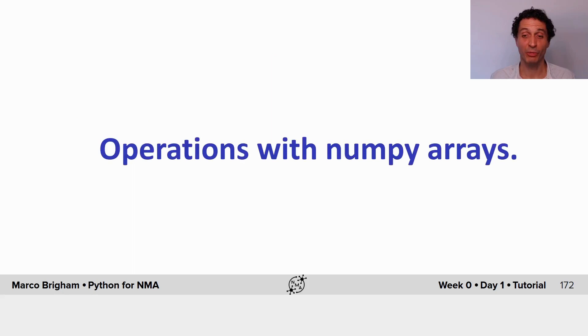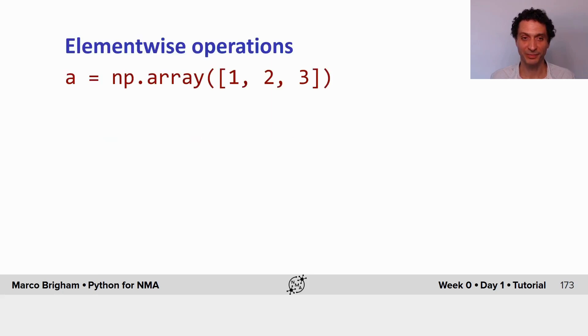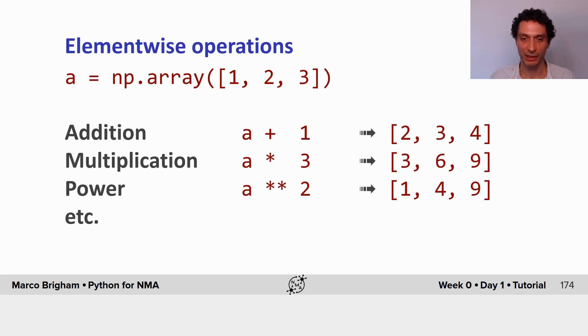So let's look at the operations with NumPy arrays. The usual operations, they happen element-wise, so adding 1 to an array that has values 1, 2, 3, you're just adding 1 to each element, and it's the same with multiplication and with power.